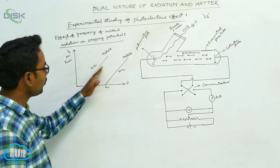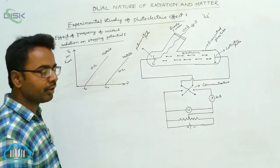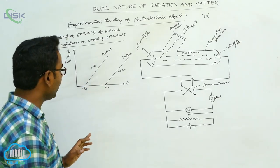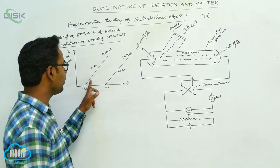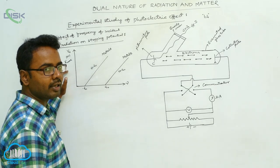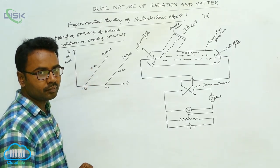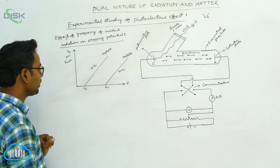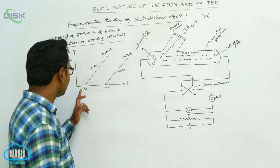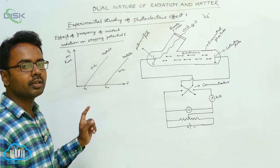We draw the graphs for two metal surfaces A and B. For metal surface A, as we increase the frequency, the stopping potential or maximum kinetic energy of photoelectrons is increasing linearly. We also observe that the graph starts from a minimum frequency, called the threshold frequency, denoted ν₀.